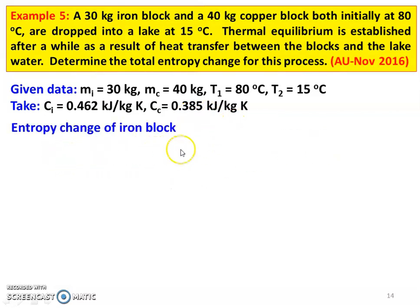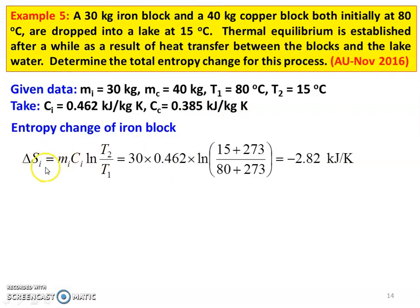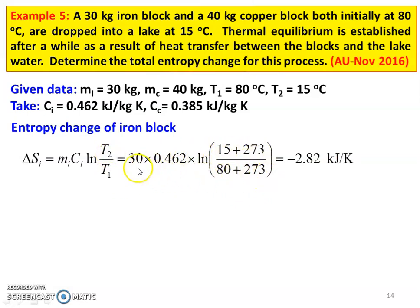Entropy change of the iron block: delta S_I = M_I × C_I × ln(T2/T1). So, M_I = 30 kg, C_I = 0.462, ln(T2/T1) = ln((15 + 273) / (80 + 273)). Calculating the entropy change of the iron block gives minus 2.82 kJ per Kelvin. Since there is a decrease in temperature of the iron block, the entropy change is minus 2.82 kJ per Kelvin.